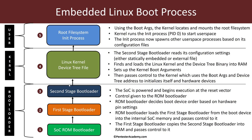The kernel will initialize the different hardware components, look into the boot arguments passed by the bootloader, locate the root file system, and mount it. Once it successfully does that, it will search for the init process on that file system, which is really the first user space process with PID 0. Once it invokes the init process, init in turn will look at its configuration files and start other user space processes.